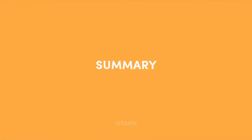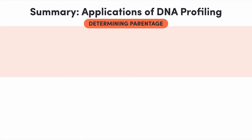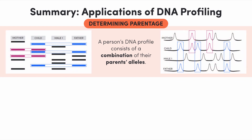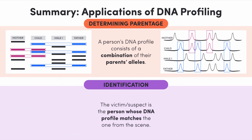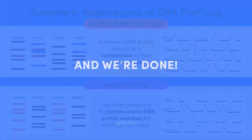Let's wrap up. DNA profiles can be used to determine the identity of someone's biological parents — since people inherit half of their alleles from each parent, their DNA profiles consist of a combination of their parents' alleles. DNA profiles can also be used to identify an unknown person: the victim or suspect is the person whose DNA profile is a complete match to the DNA profile generated from a sample taken from the scene. That's it for this video — chat soon!